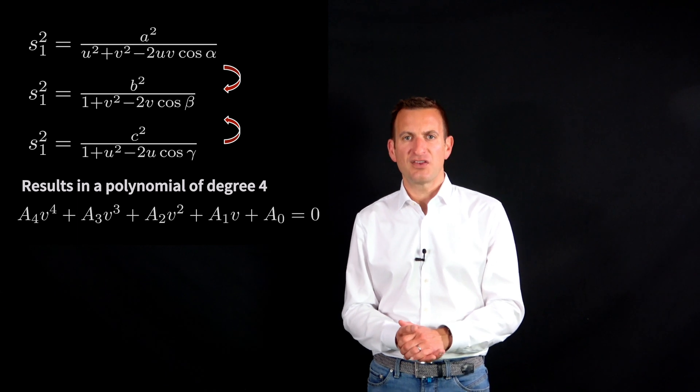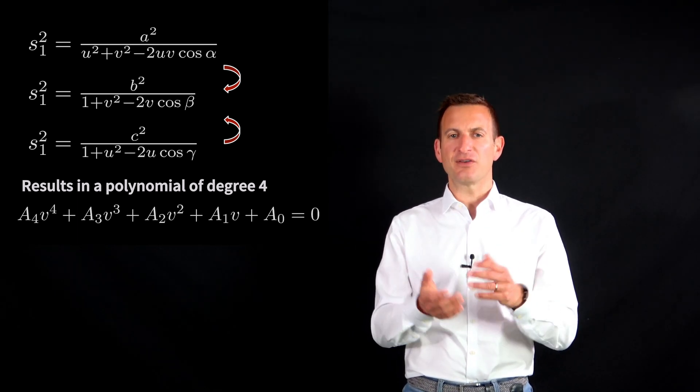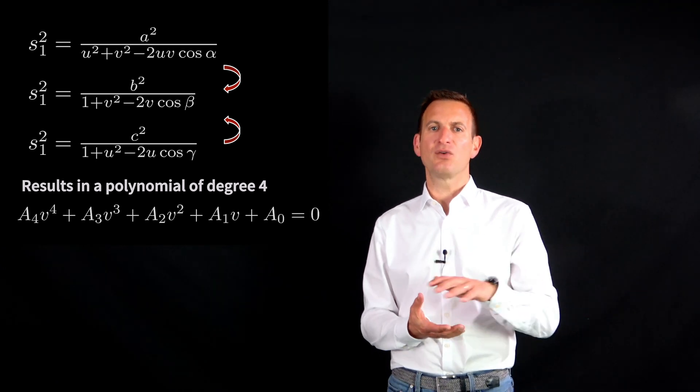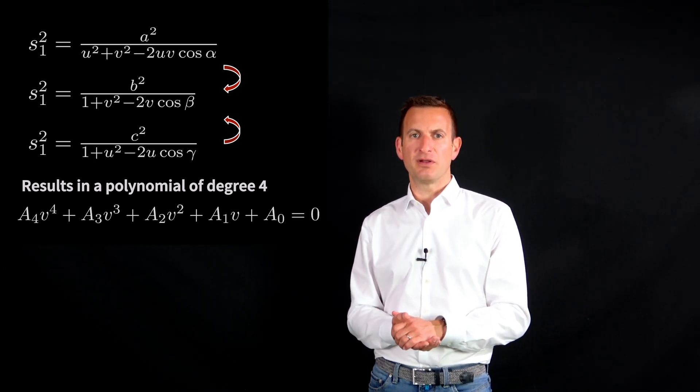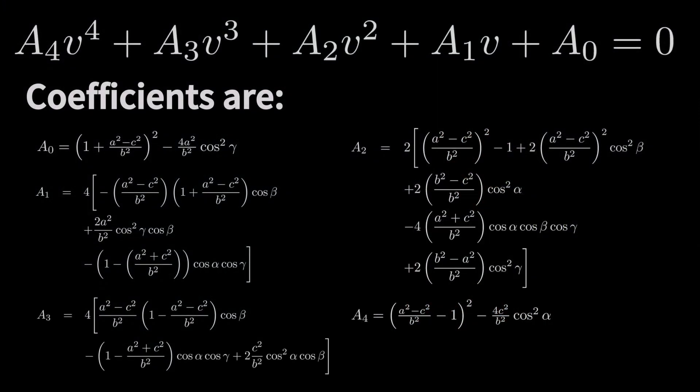We set up a polynomial of degree 4, which takes the different computed values into account. This can be a somewhat complicated mathematical exercise, but nothing really bad happens. The coefficients of this polynomial can get a bit ugly — it's nothing you easily derive by hand — but overall it's not very complicated, and we can compute all those individual coefficients.